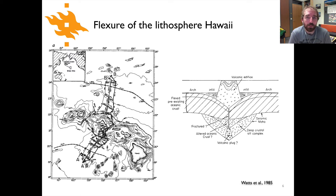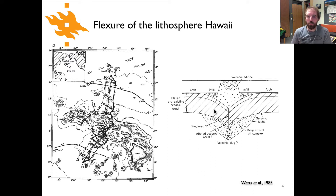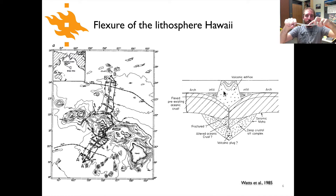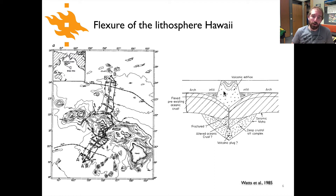Here we have another example of flexure beneath the volcanic islands of Hawaii. These islands are thought to be the result of hot spot volcanism in the Pacific plate. The island chain is shown in map view on the left, with a cartoon cross-section through one of the volcanic islands on the right. You can see a relatively large piece of volcanic material piled up on top of the lithosphere, causing it to flex downward beneath it. If I hold the ends of the ruler and apply a load in the middle, you can see the ruler flexes downward — that's what we think is happening beneath the Hawaiian volcanic islands.